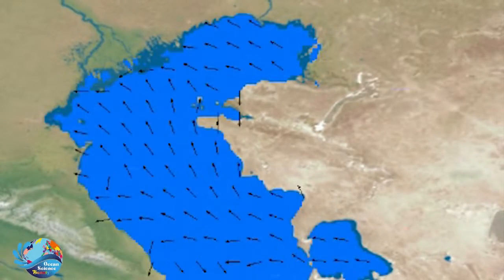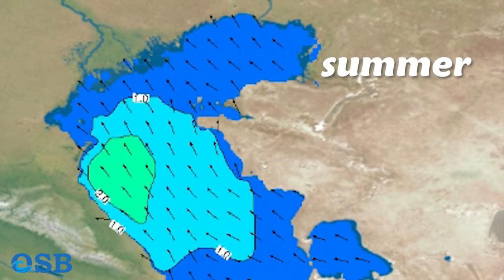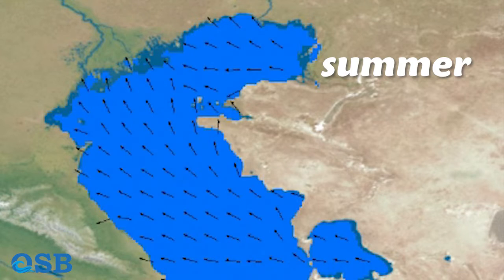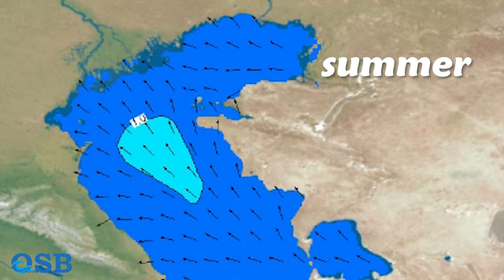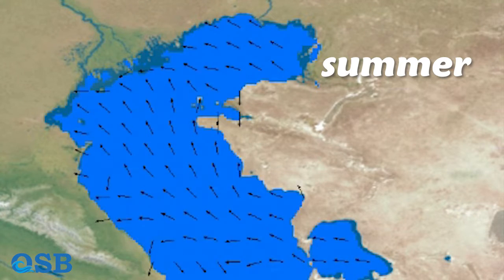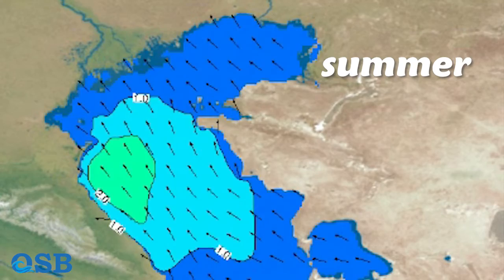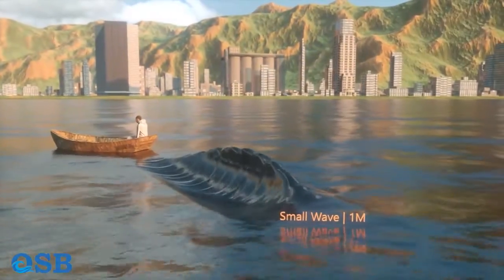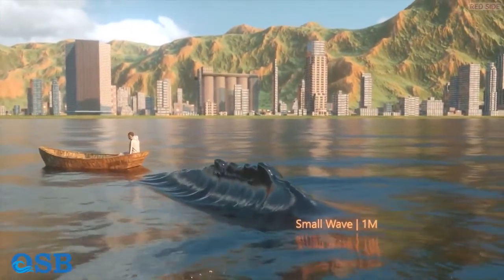The calmest season in the north Caspian is the summer, when windless weather often dominates most areas. Thus, we predict that the height of the wave is not remarkable in this season. But in the cold season, the highest waves occur in the Caspian Sea.